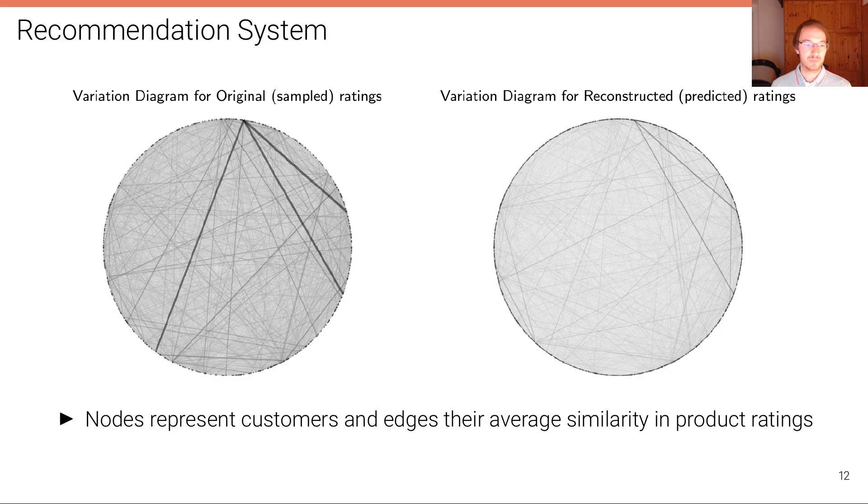Similarly, for recommender systems, in the recommender systems the nodes at the boundary of the circle here represent customers, and the edges represent their average similarity in terms of product ratings. If we have now—we want to infer a possible product rating for a customer, but we don't have that rating yet because we want to present that product to the customer—but maybe we know that this customer rates very similarly than another customer, then we can do such an inference for this missing connection.